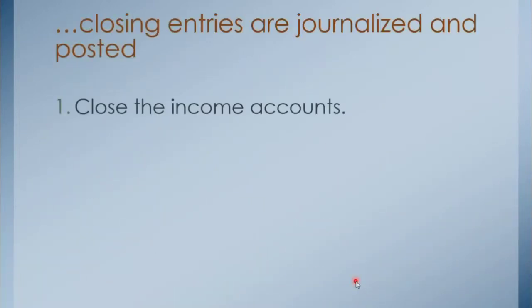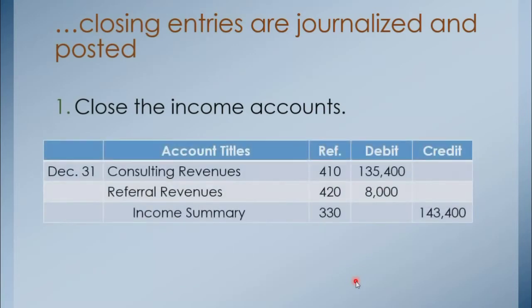First, close the income accounts. At the end of the accounting period, income accounts must be reset to zero. To do this, the closing entry would be to credit all the revenues and debit income summary. Income summary is used to close the income and expense accounts. If you recall the rules of debit and credit, the normal balance of revenue is credit. But since we need to reset the revenue accounts to zero balance, they should be debited.